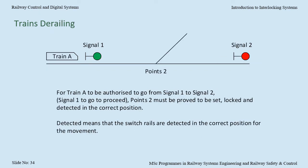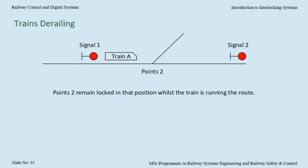Now let's consider the train derailing risk. The principal risk here is that points are not in the correct position for the train. Before the interlocking allows a movement authority to be given to train A, it first confirms that the points are set, locked and detected in the correct position for the train. The detection means that the switch rails are detected as being in the correct position for the movement. Once the movement authority has been given to train A, it will hold the points in that position until train A is clear of the points.